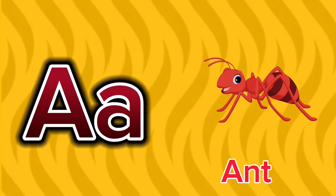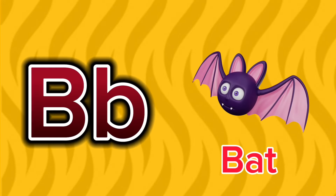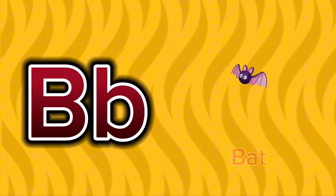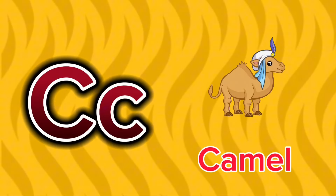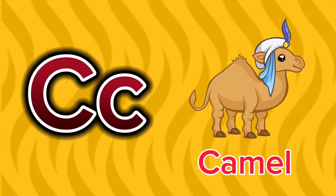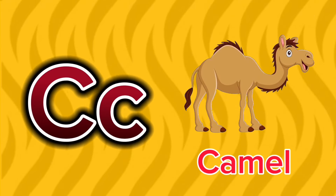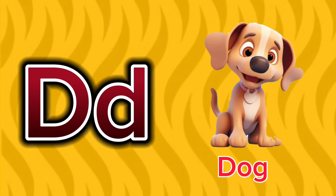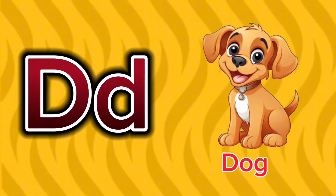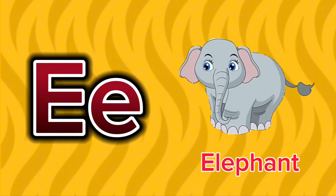A is for Ant. A, A. Ant, A is for Ant. A, A. B is for Bat. B, B. Bat, B is for Bat. B, B. C is for Camel. C, C. Camel, C is for Camel. C, C. D is for Dog. D, D. Dog, D is for Dog. D, D. E is for Elephant. E, E.